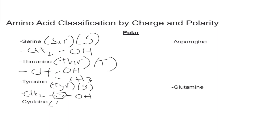Cysteine is abbreviated CYS with one-letter C. Cysteine is the same as serine but instead of an oxygen we use a sulfur: CH2-SH. That is called a thiol — don't confuse it with the thioether from methionine. Unlike methionine's thioether, this thiol is actually polar.